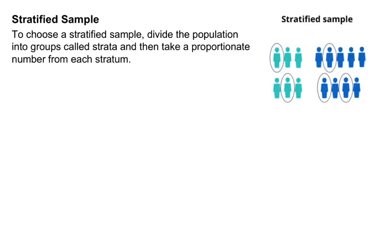Another type is stratified sampling, which breaks up the population into groups, and then we select from every single group. For example, if I wanted to sample some statistics classes, I might break it up by class, then go to each class and sample five students. We typically do it proportionately, so if a class has more students, I might select more from there.